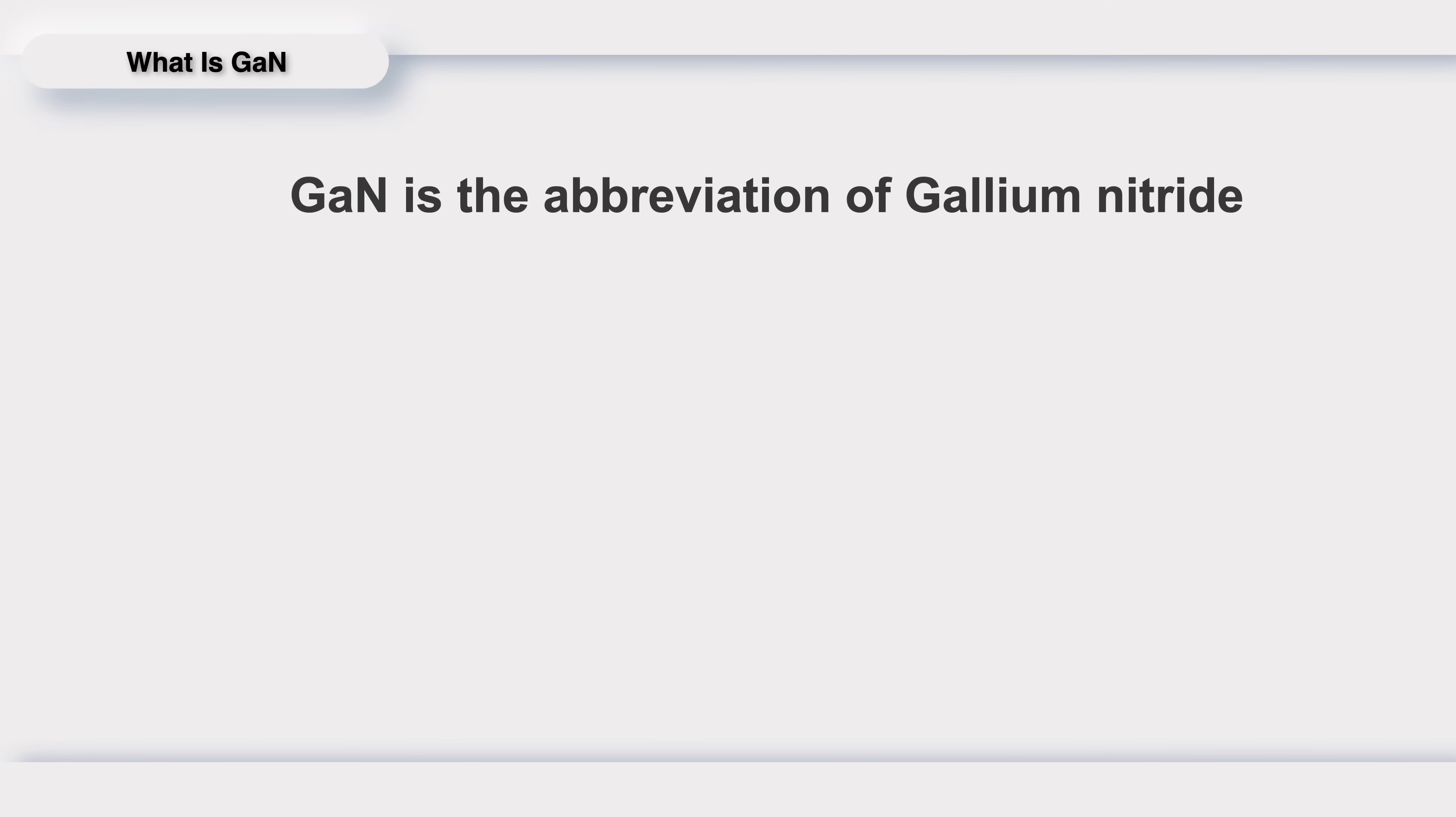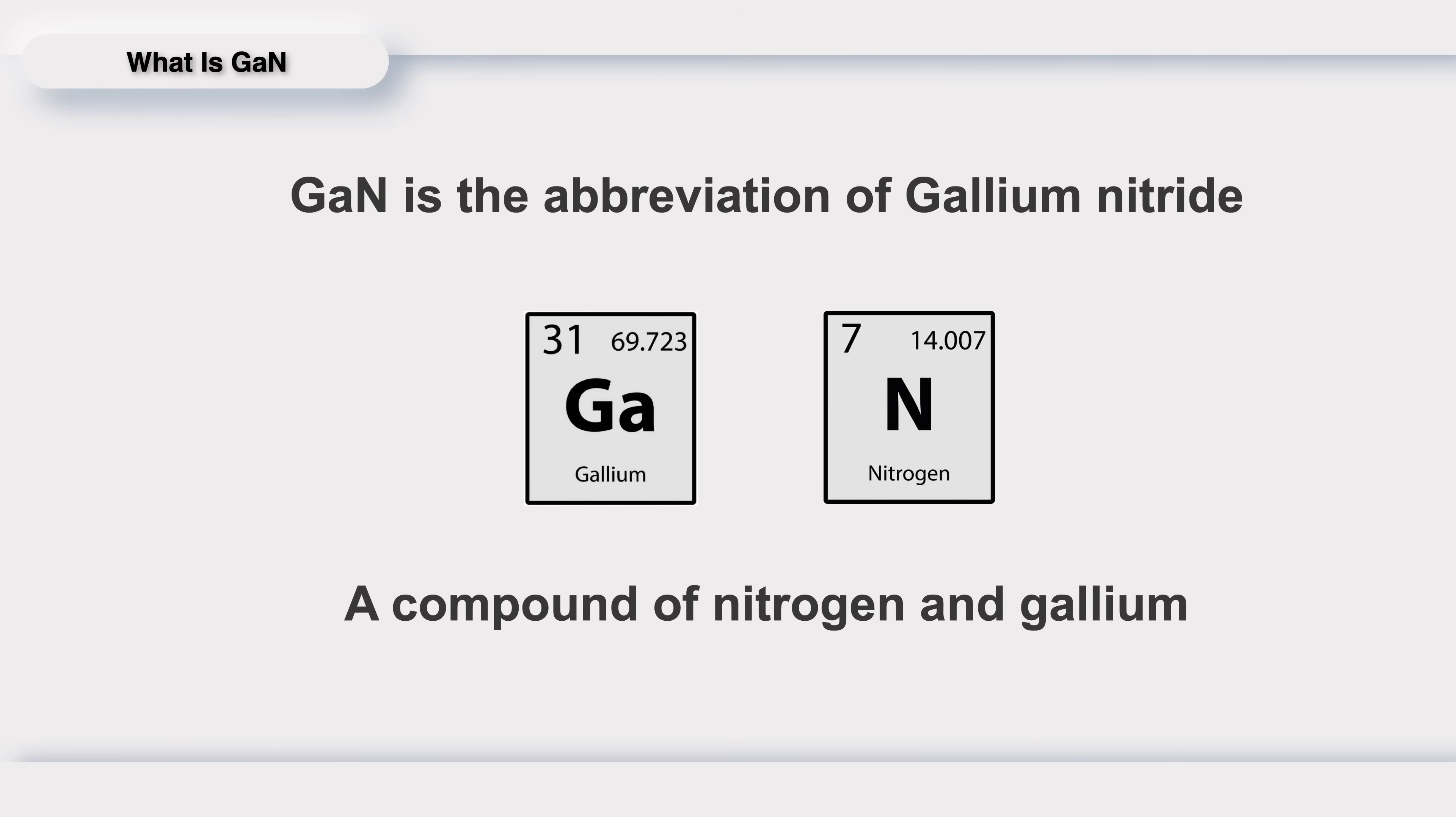GAN is the abbreviation of gallium nitride. It is a compound of nitrogen and gallium, and is well-known as a third-generation semiconductor material.